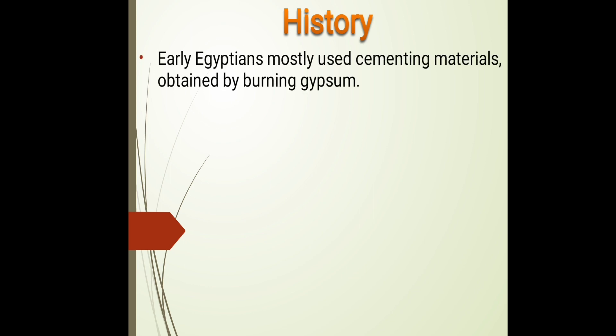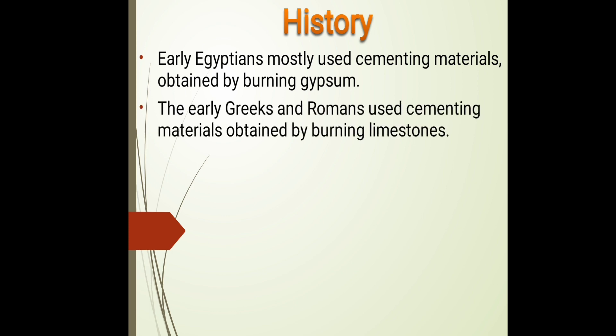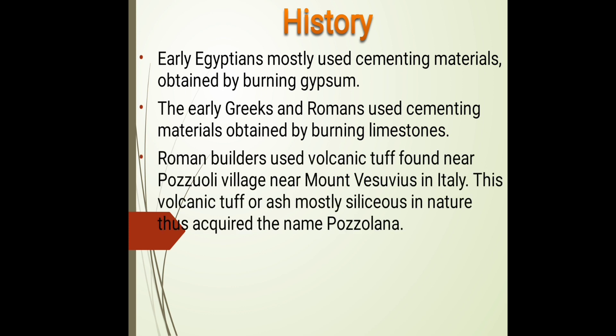Concrete or cement is not a recent material - it has been in use for thousands of years. The Egyptians used cementing materials obtained by burning gypsum. Early Greeks and Romans introduced cementing materials by burning limestone to build structures. In concrete technology there is a relevant term we need to know: the pozzolanic material.